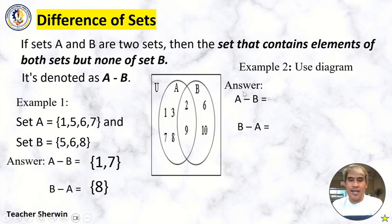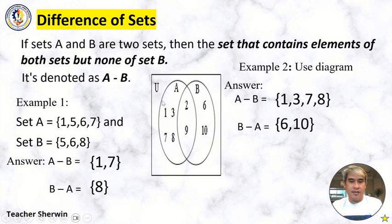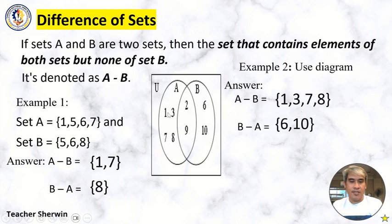How about using a diagram? For A minus B, remove the numbers in the middle shared by A and B, which are 2 and 9. The remaining elements in Set A are {1, 3, 7, 8}. For B minus A, same procedure — remove 2 and 9, so the remaining elements in Set B are {6, 10}.